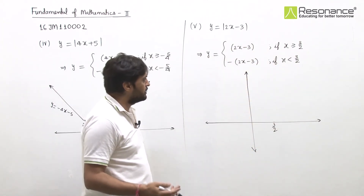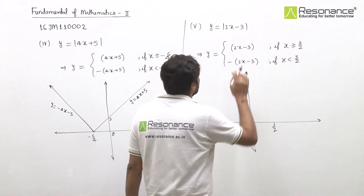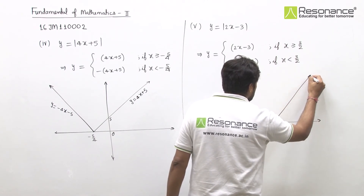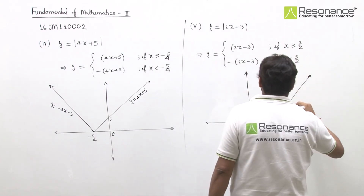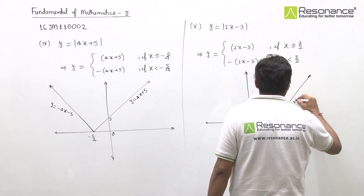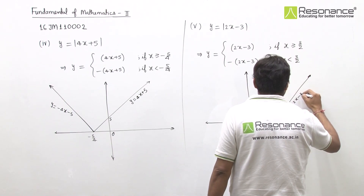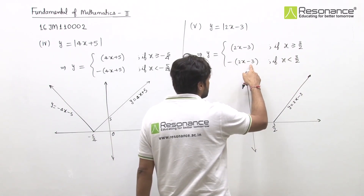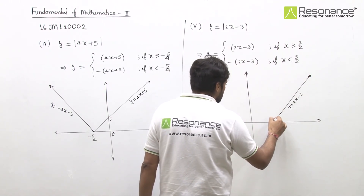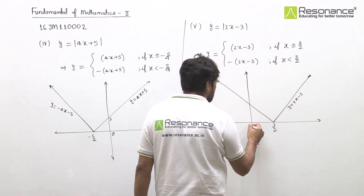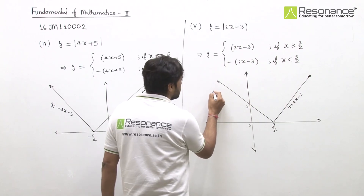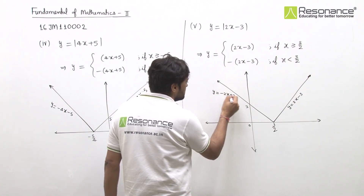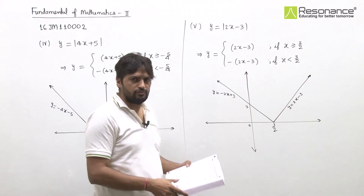For x greater than 3/2, taking say x = 2: value is positive, so the graph goes up. For x less than 3/2, say x = 0: value is mod of minus 3 = 3, which is positive. So y = minus 2x plus 3 for x less than 3/2. This is the labeled graph of the fifth part.